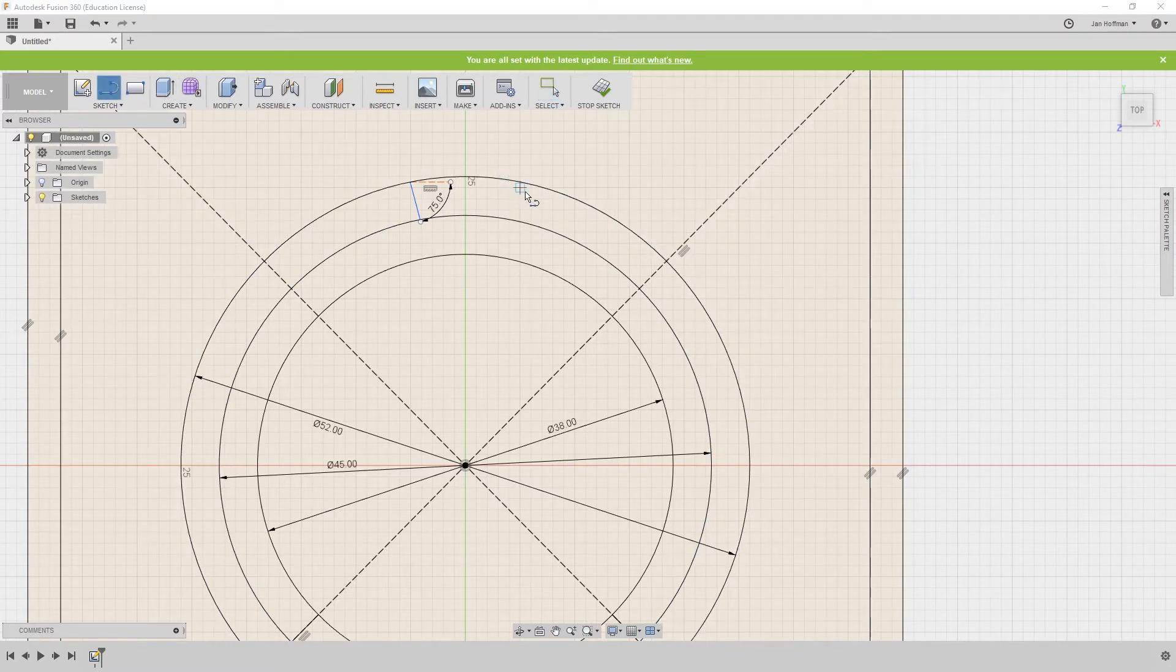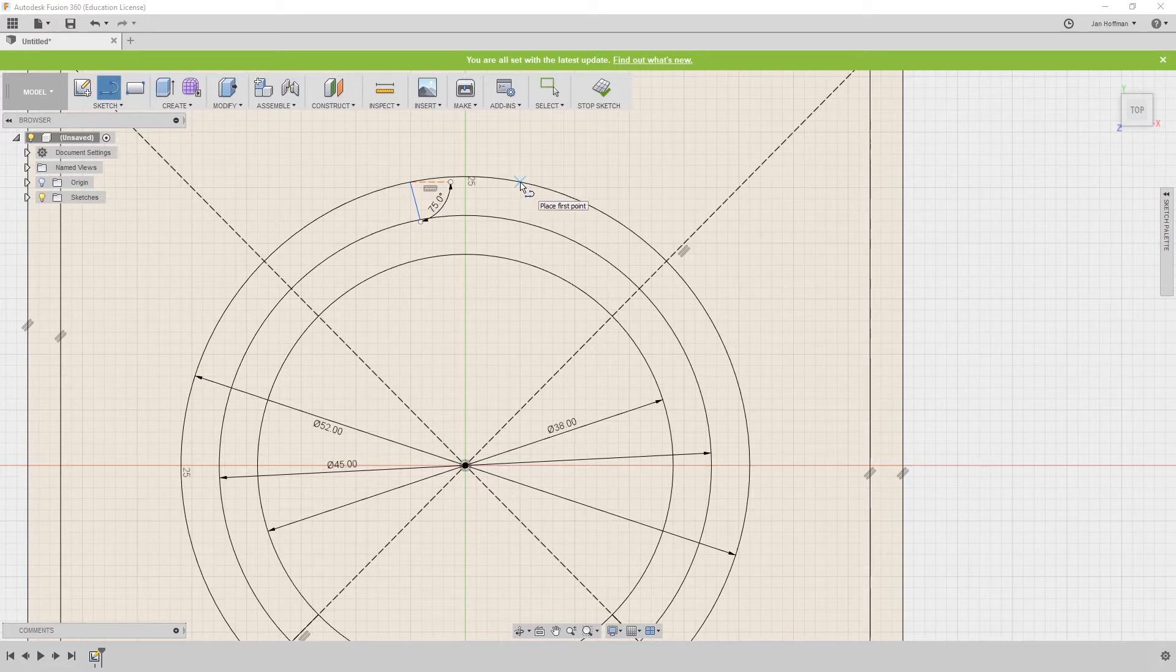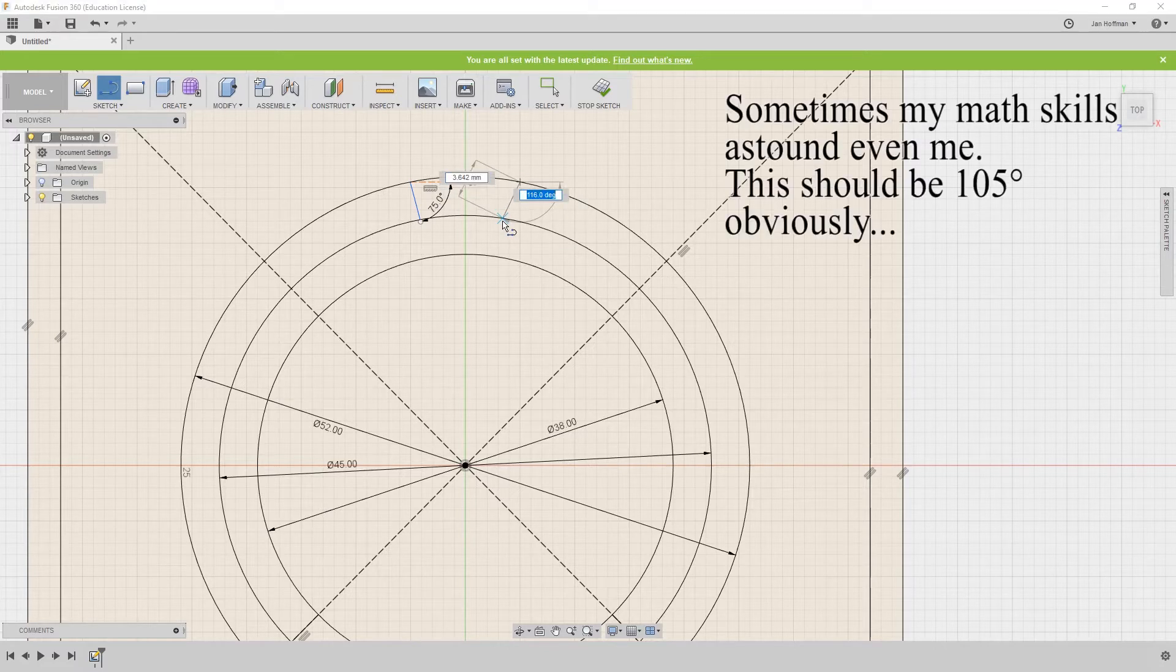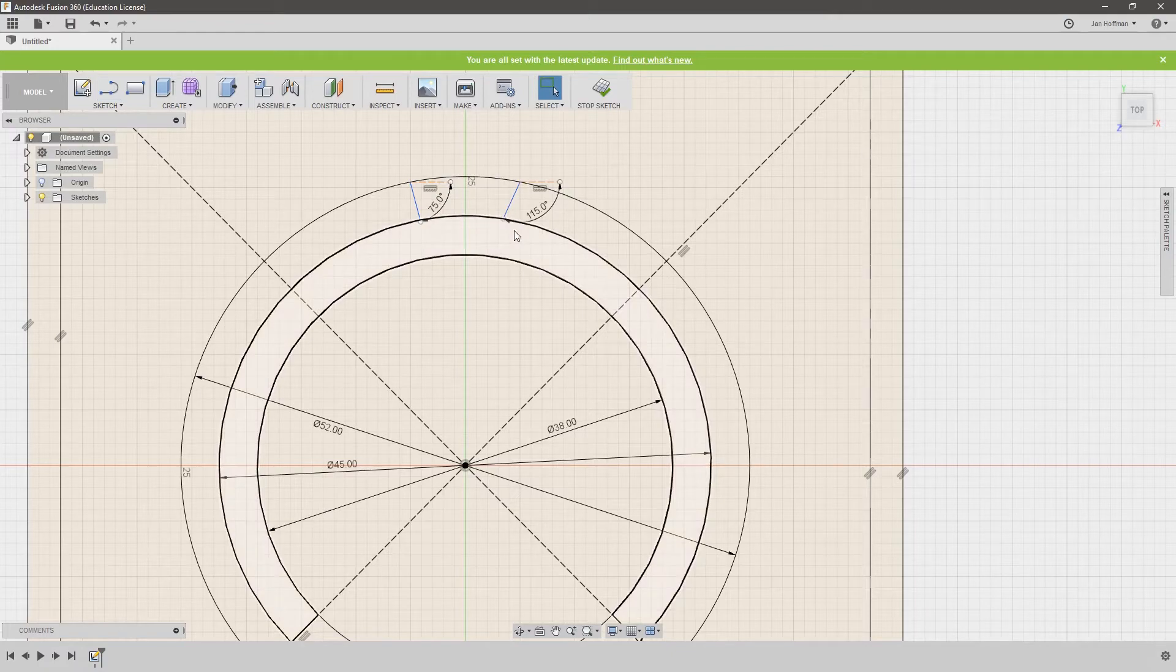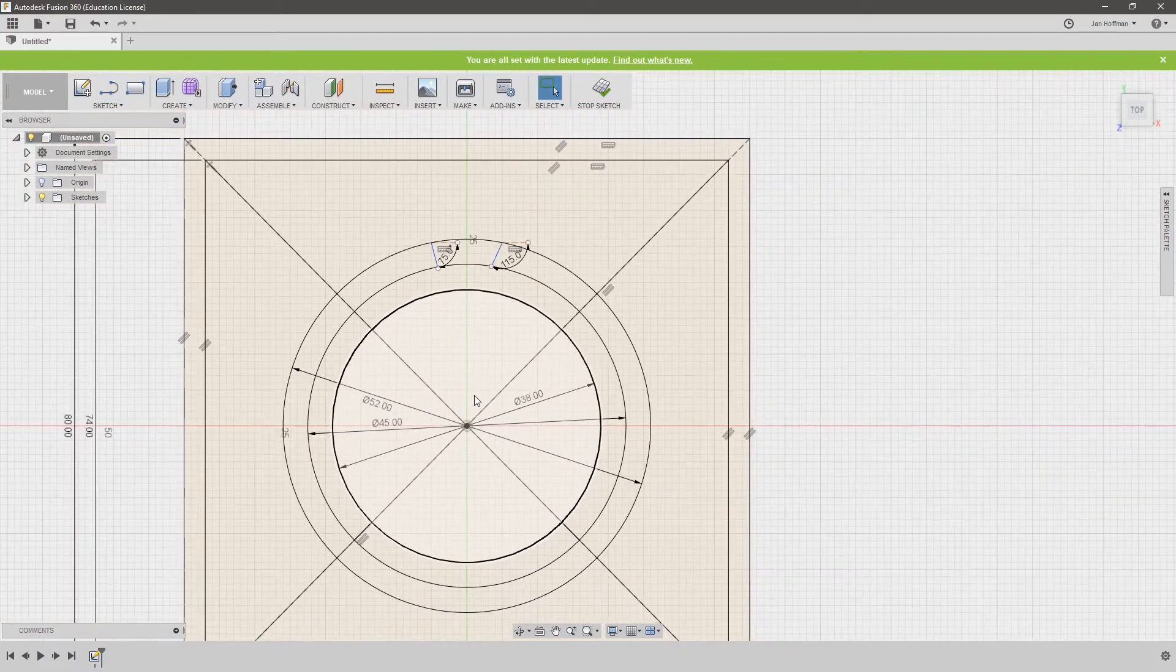And then repeat on the other side, make it thick enough so that it's gonna be sturdy, but not too thick to waste material. And this should be 105, I'm doing it at 115, because I have no idea what I'm doing.